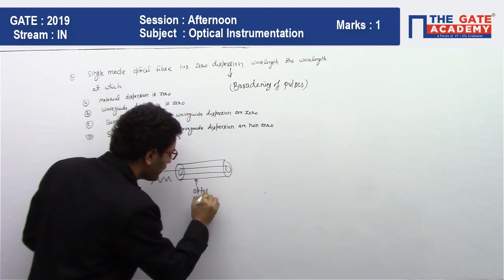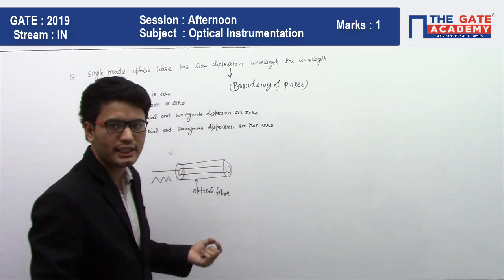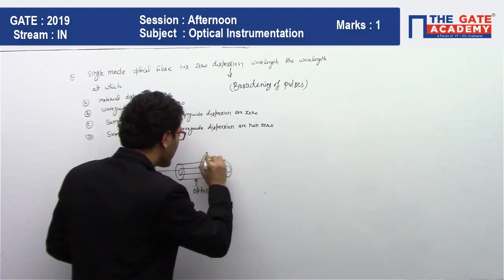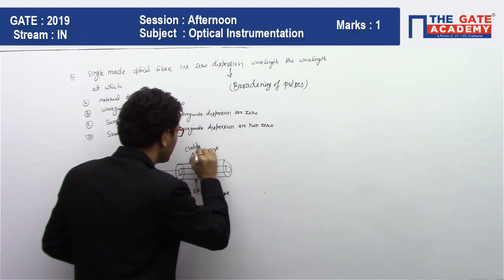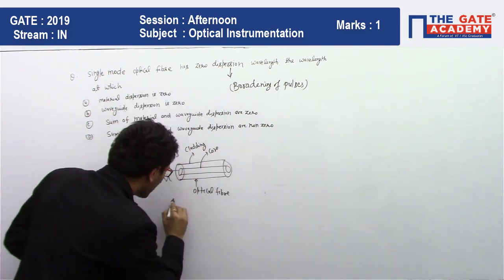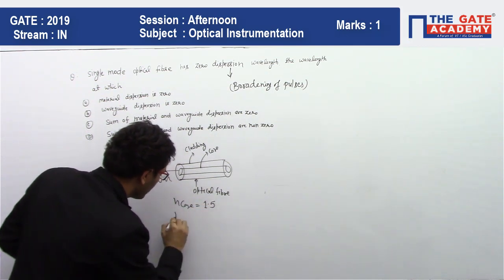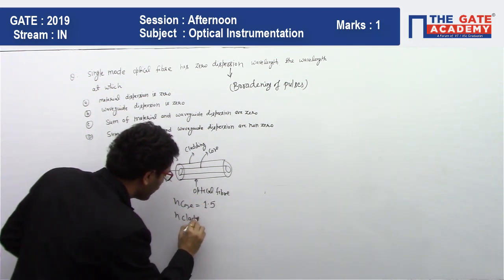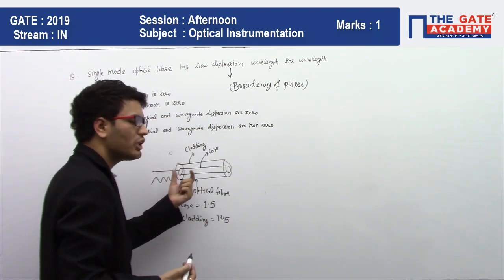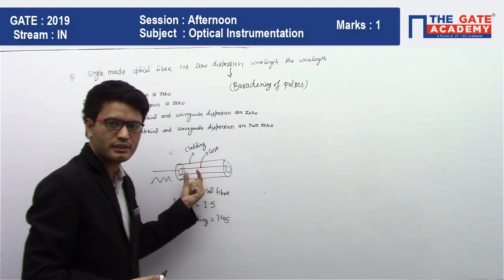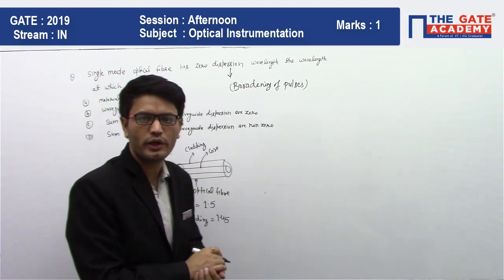The optical fiber is basically made of two materials: the core and the cladding. The core refractive index is very high, around 1.5, while the cladding refractive index is around 1.45. Based on this variation in refractive index, the velocity of light is going to change.